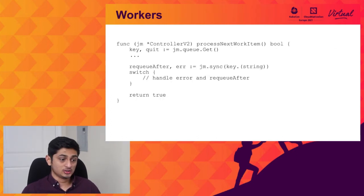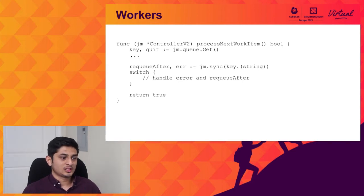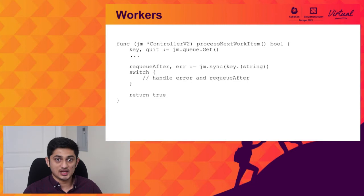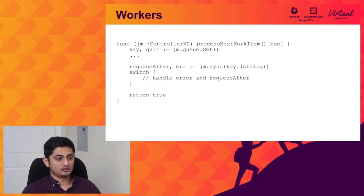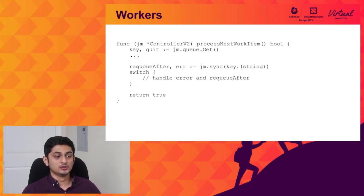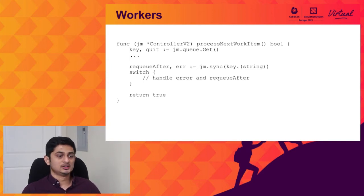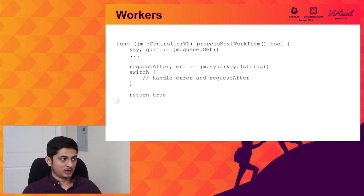To sum this up, resource event handlers are implemented in a way that converts events from the informers into specific keys that are inserted onto the queue. Once we have elements on the queue, the wiring of the workers that perform sync operations is quite simple. The worker loops on a function called processNextWorkItem. The very first thing in that function is attempting to get the object from the queue — a blocking call that will block until there is an element. Once the worker has the right key, it passes that key to the sync function, which is where the business logic of the controller is.